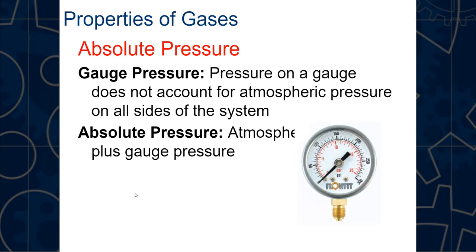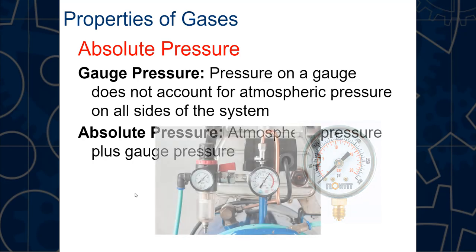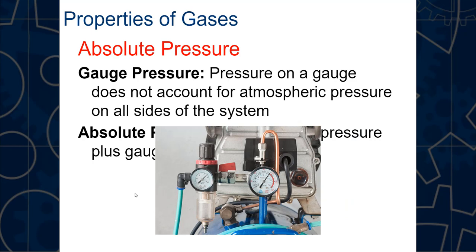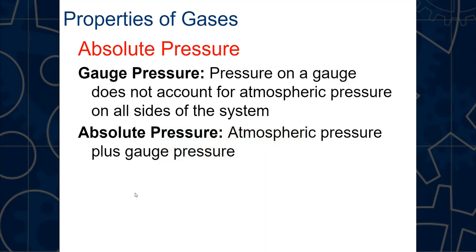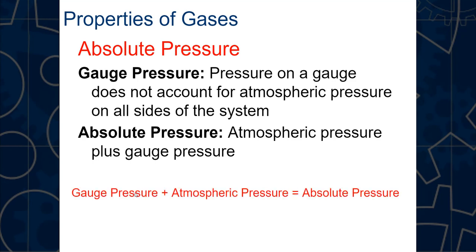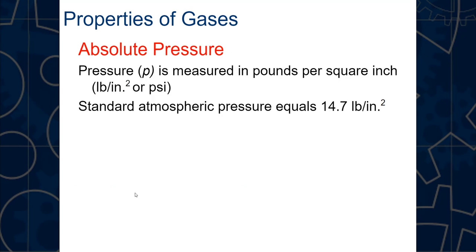We're typically reading gauge pressure — just the number on the dial or tank that reads the pressure inside. Absolute pressure is atmospheric pressure plus gauge pressure. So the number we typically read is not the number we want in our formulas. We need to know atmospheric pressure so we can add gauge pressure and atmospheric pressure to get absolute pressure. We'll be using psi — pounds per square inch — in the standard system.